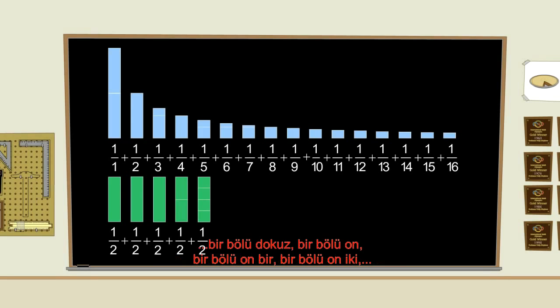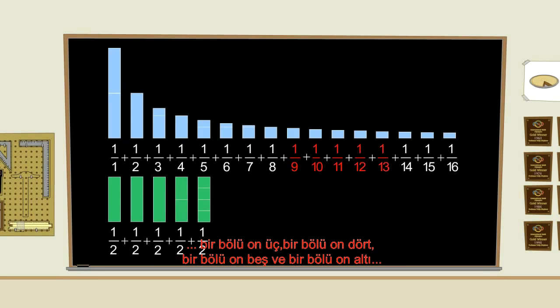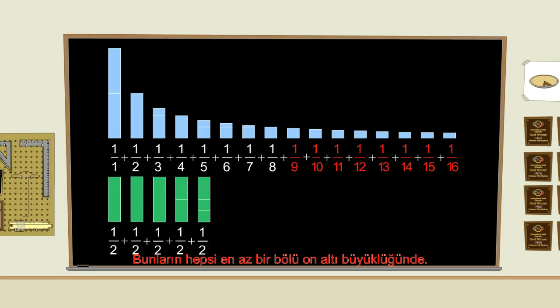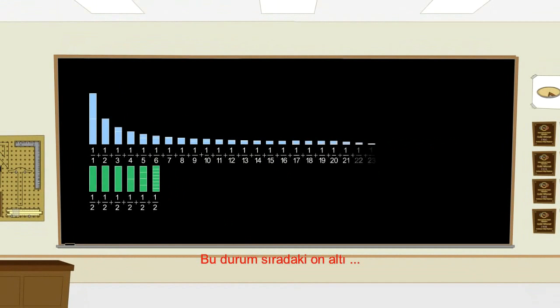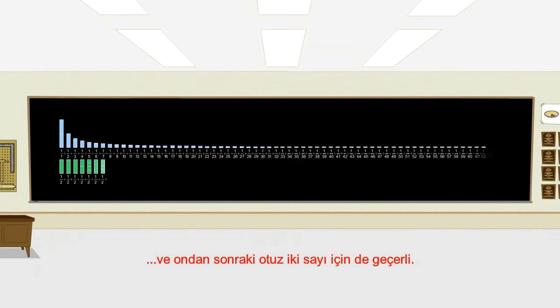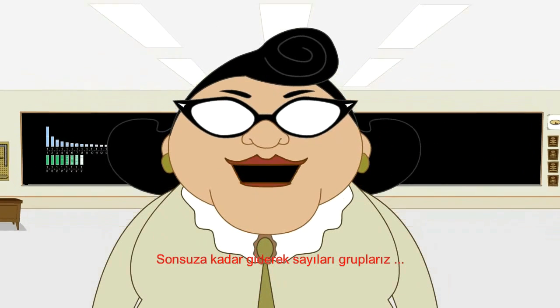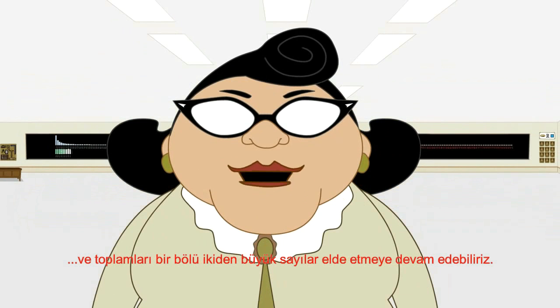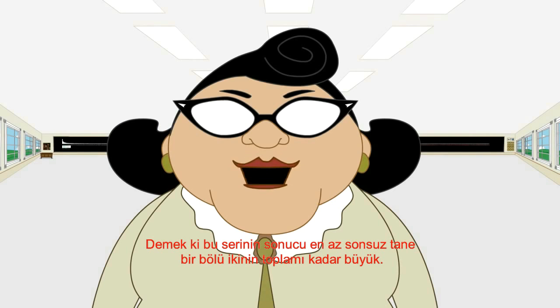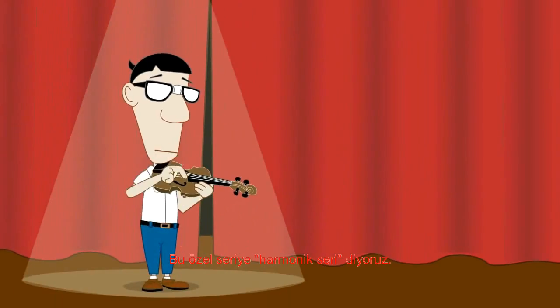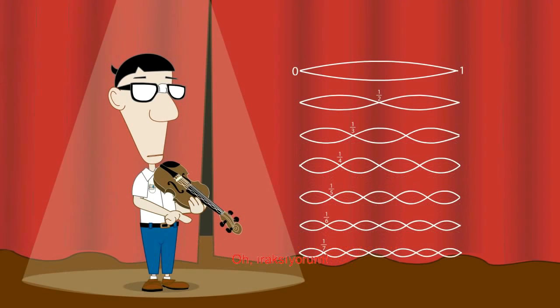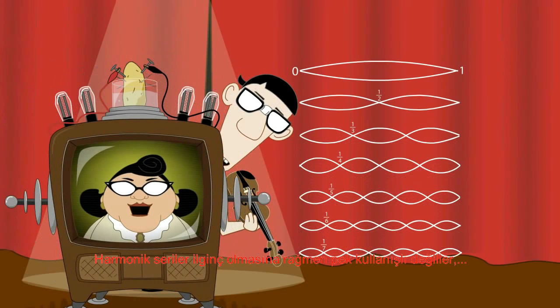Likewise, the next eight terms, 1 ninth, 1 tenth, 1 eleventh, 1 twelfth, 1 thirteenth, 1 fourteenth, 1 fifteenth, and 1 sixteenth, are each at least as big as 1 sixteenth. So, when we add them together, their sum will be bigger than 8 times 1 sixteenth, or once again, 1 half. Likewise, the sum of the next 16 terms is bigger than 1 half, and the sum of the next 32 terms is bigger than 1 half, and so on. We can keep going on forever, grouping the terms into sums which equal more than 1 half. So, the sum of this infinite series is at least as big as the sum of an infinite number of 1 halves, which is, of course, infinite. This particular series is called a harmonic series, because its terms are similar to the harmonics of a musical note. Although the harmonic series is interesting, it is not very useful, because its sum never converges.